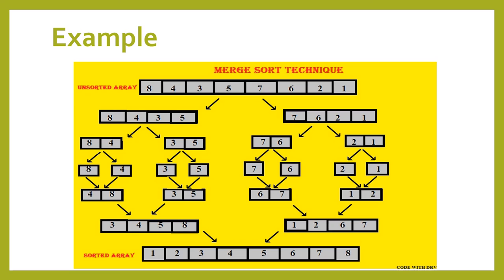Again the first array is divided into two parts using the mid formula: 8, 4 and 3, 5. The second array is also divided into two parts: 7, 6 and 2, 1. These are further divided into single elements.